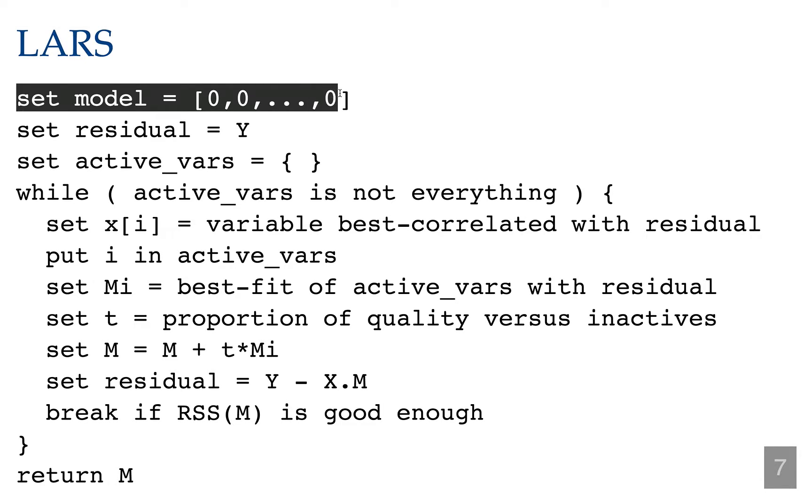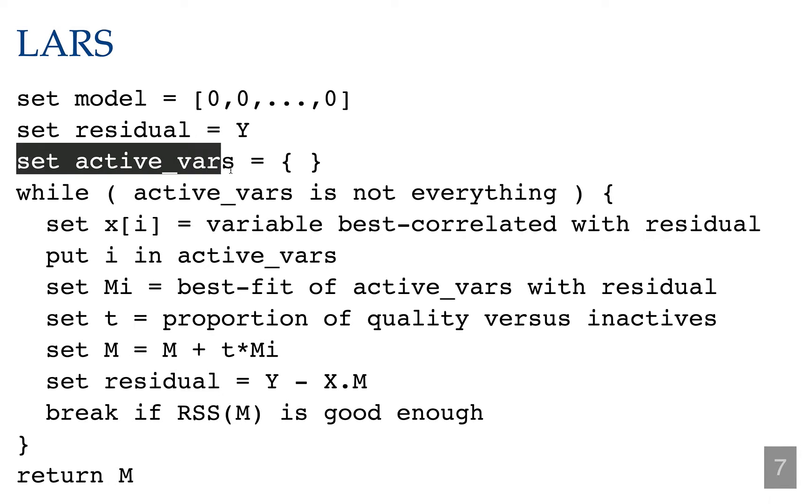First of all, we begin with a zero model. Because we have a zero model, the residual of the model is y minus the model times our x's, which is of course just y itself. Now something that makes the LARS algorithm very special is you want to maintain a list of active variables. As a data structure, the active variables list could be a list object that's been sorted and therefore easy to search. It could be a set object if your language supports that. And actually if you're using NumPy, a convenient way to do the active variables is as a boolean array that you can use for rapid indexing of your model.